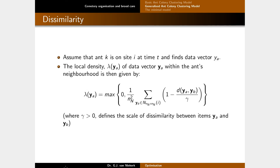Let's assume ant k is on site i at time t and finds data vector ya. It now needs to calculate the local density λ(ya) of that vector — that is, within the patch around it, are there other vectors similar to it, or is it unique? We sum up the dissimilarity between ya and each yb across all vectors in the patch. For a 5×5 patch, that gives us 25 values to sum.